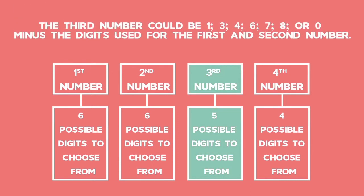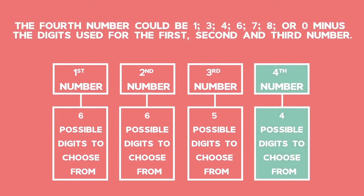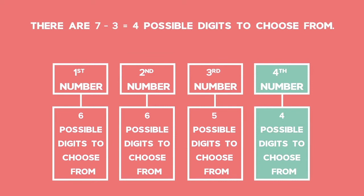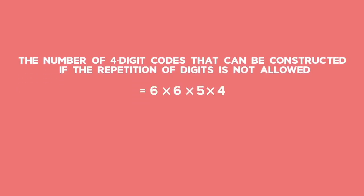The third number could be 1, 3, 4, 6, 7, 8 or 0 minus the digits used for the first and second number — there are 7 minus 2, which gives 5 possible digits. The fourth number has 7 minus 3, which gives 4 possible digits. The number of four-digit codes if repetition is not allowed is 6 times 6 times 5 times 4, which equals 720.